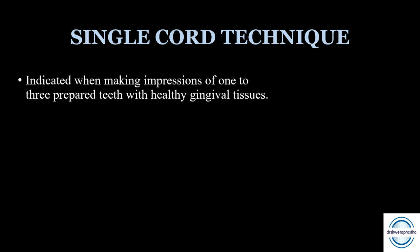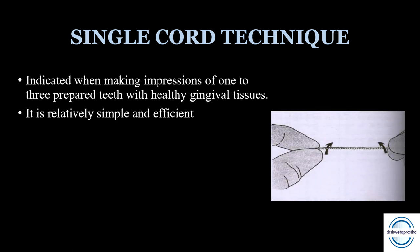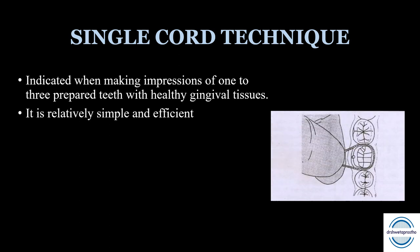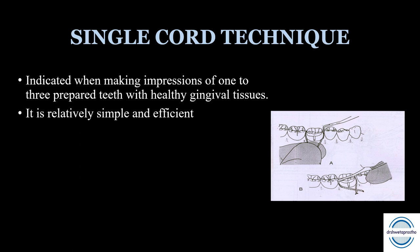The single cord technique is one of the most commonly used methods for gingival displacement. It is indicated for impressions of one to three prepared teeth with healthy gingiva — no signs of inflammation or laceration. First, select the length of retraction cord according to the anatomy of the sulcus. The largest diameter that can be placed atraumatically should be chosen. A loop of retraction cord is formed around the tooth and held between thumb and forefinger. Placement starts from the mesial surface, counterclockwise — an MCQ point.